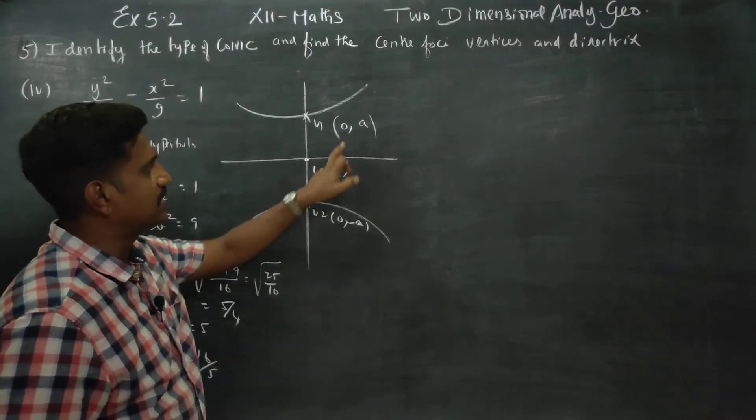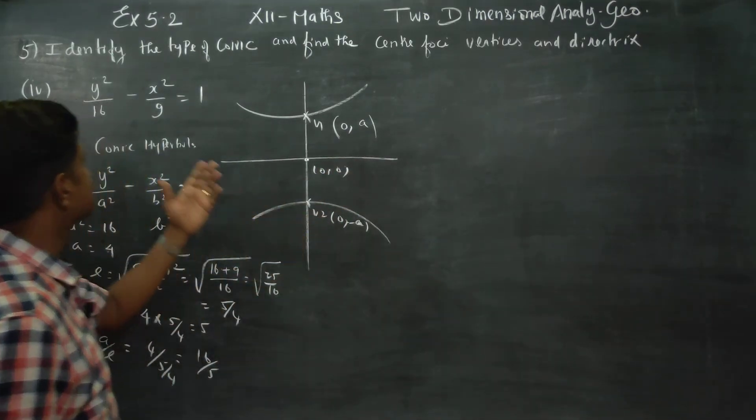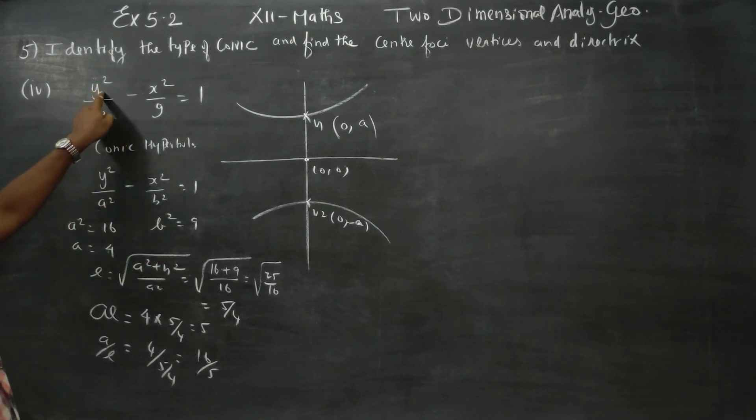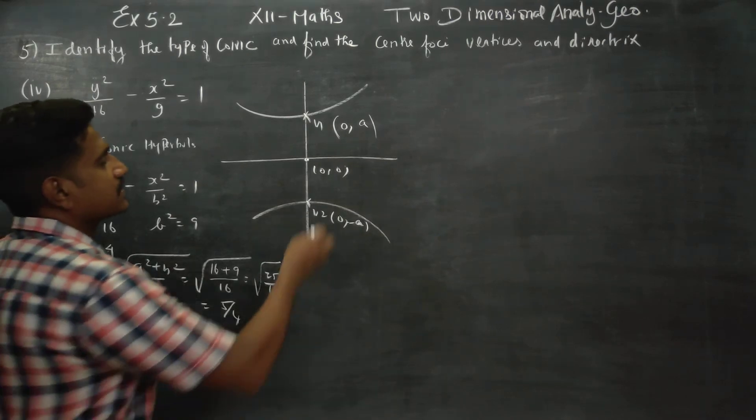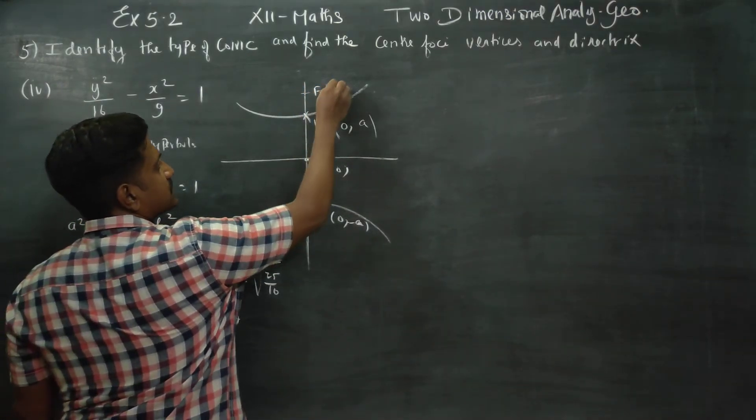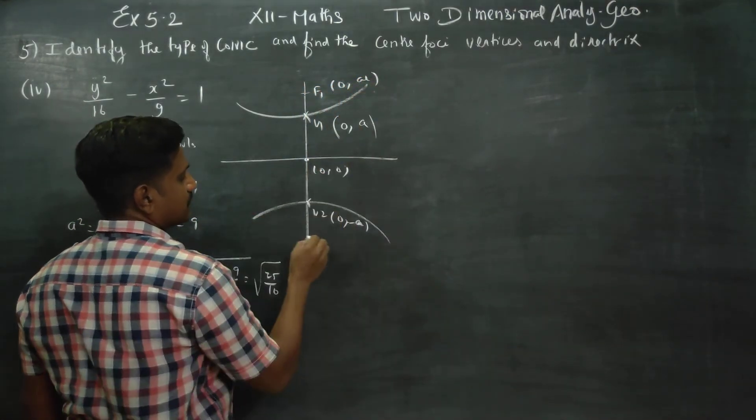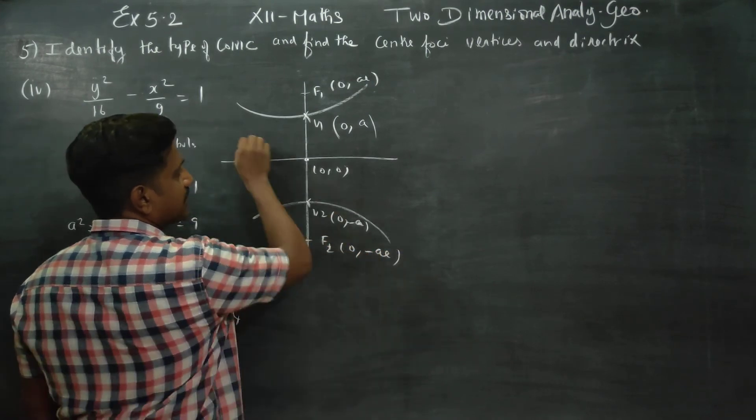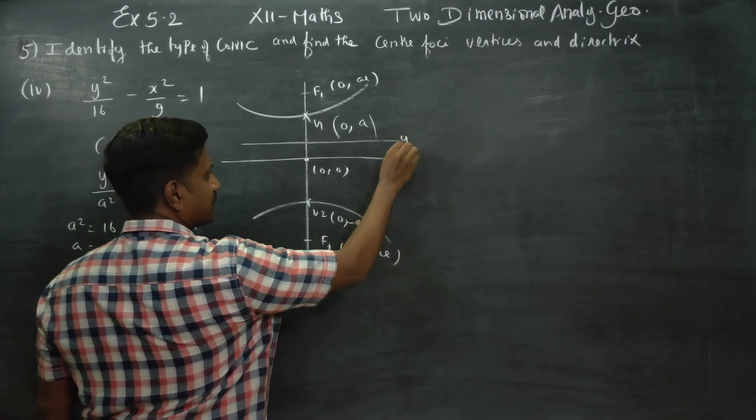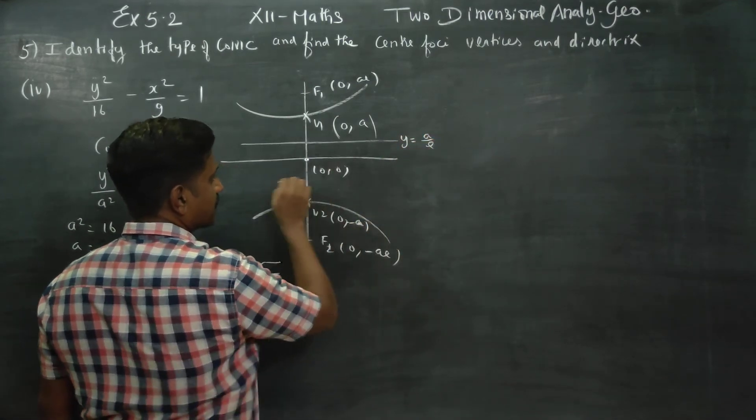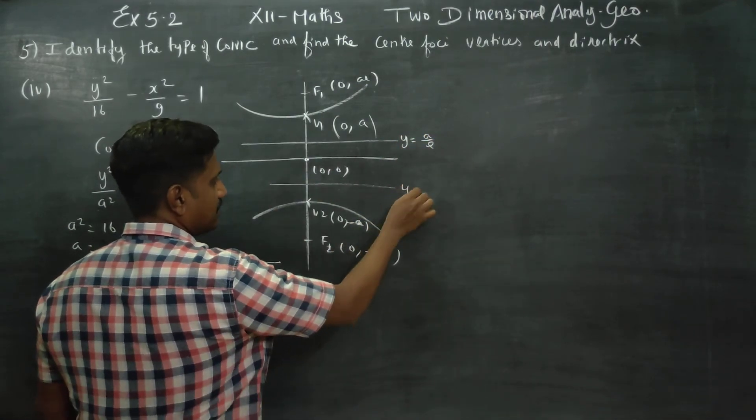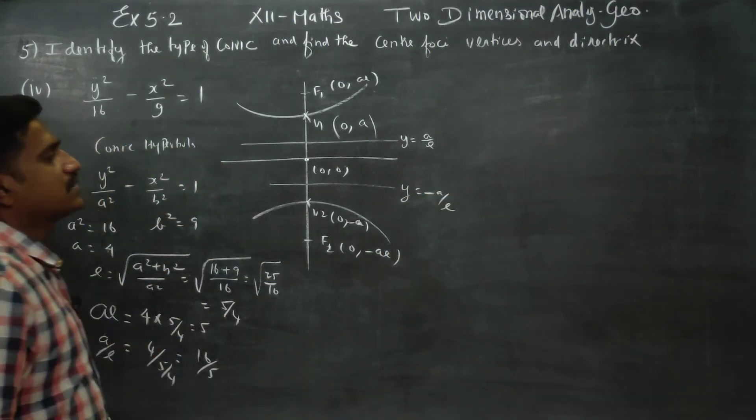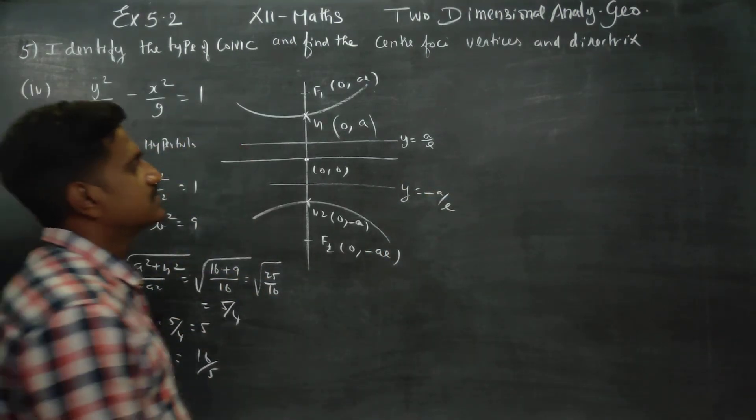H, K is zero, so center is 0, 0. Focus is 0, ae. Focus f2 is 0, minus ae. Directrix, when it's on the y-axis, y is equal to a by e on the positive side and y is equal to minus a by e on the negative side. These are the formulas.